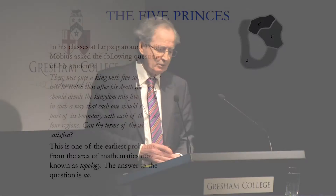The first contribution is one of the earliest problems from topology — the area of mathematics concerned with properties of shapes invariant under continuous deformation, sometimes known as rubber-sheet geometry. The question Möbius shared with his students was: a king with five sons stated in his will that after his death the sons should divide the kingdom into five regions such that each region shares part of its boundary with each of the other four. Can the terms of the will be satisfied?